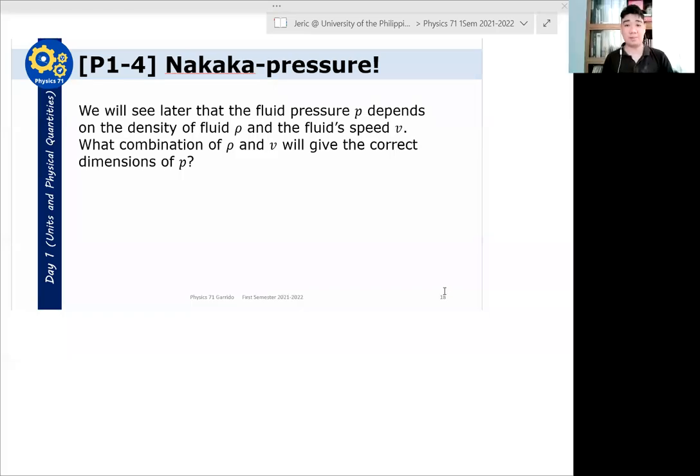Now, let's solve another problem, nakaka-pressure. We will see later, especially in the topic of fluid mechanics, that the fluid pressure P depends on the density of fluid rho, this is a Greek symbol rho, and the fluid speed V. What combination of rho and V will give the correct dimensions of P?